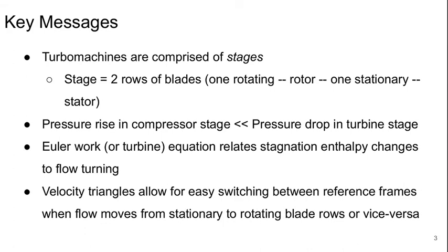The key messages are that turbo machines are comprised of stages. A stage is two rows of blades — one rotating, a rotor, and one stationary, a stator. The pressure rise in a compressor stage is much smaller than the pressure drop in a turbine stage. The Euler work or turbine equation relates the stagnation enthalpy changes to flow turning. And velocity triangles allow for easy switching between reference frames when the flow moves from stationary to rotating blade rows, or vice versa.